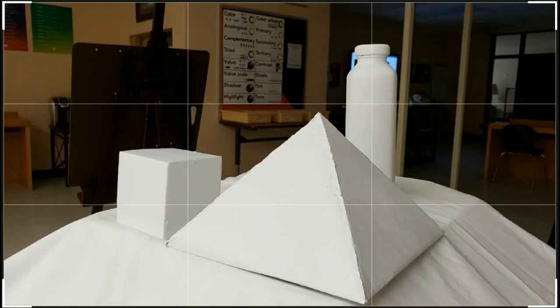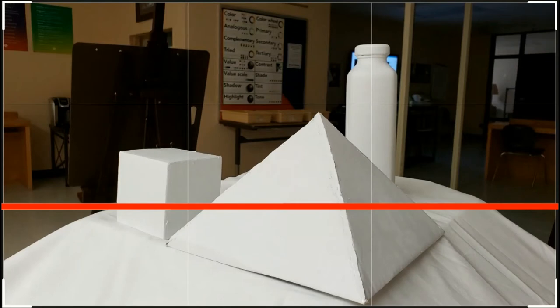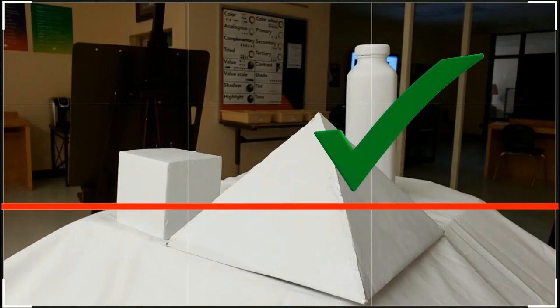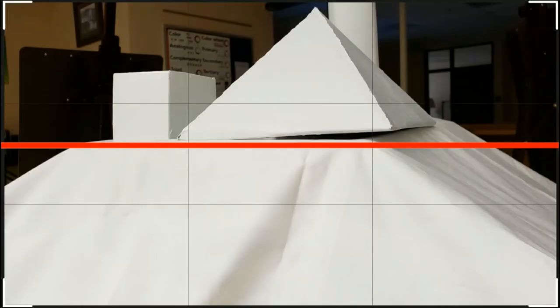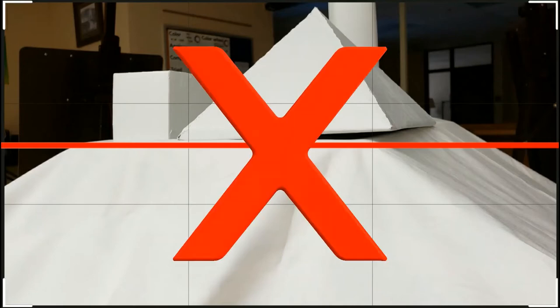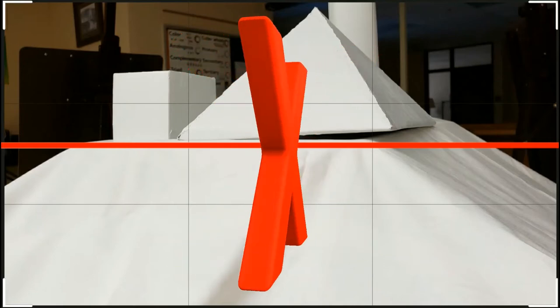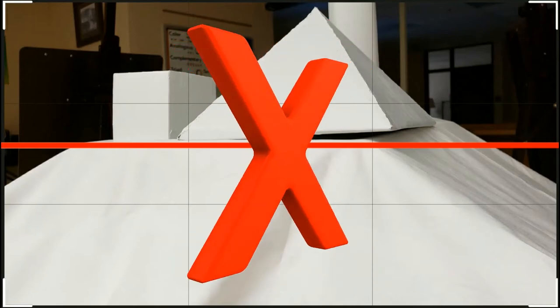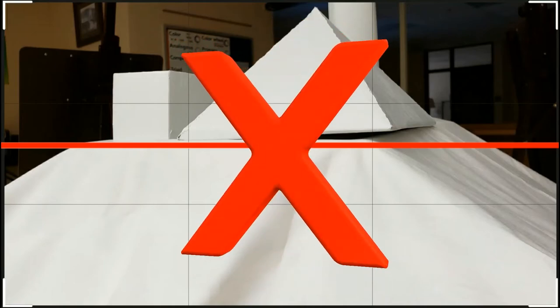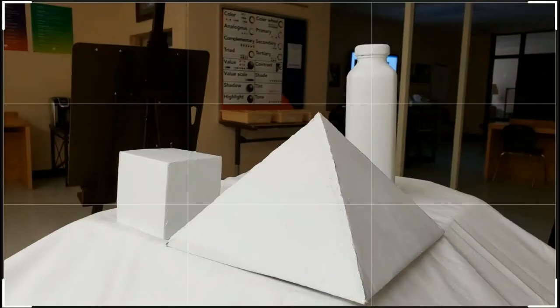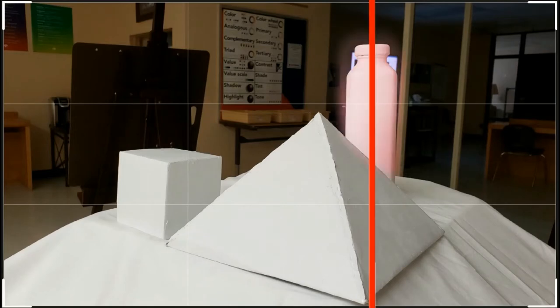Secondly, the rule of thirds also suggests that any horizon line or main flat surface in your drawing should line up with one of the horizontal grid lines. Doing this will help keep you from placing your horizon directly at the center of your drawing, which is the least interesting area to have a horizon, and is something beginning artists tend to do naturally until taught otherwise. You can also apply this rule to the vertical lines, making sure that any tall objects in your composition line up with one of the vertical grid lines.